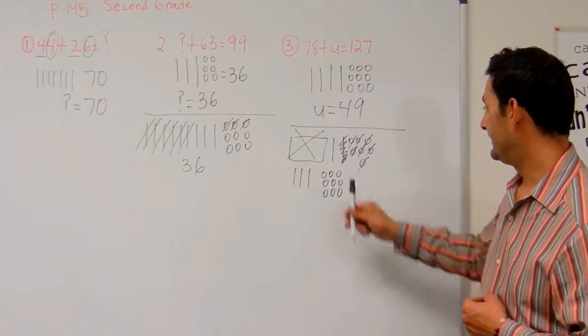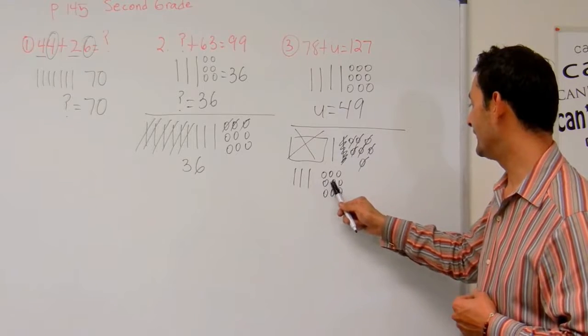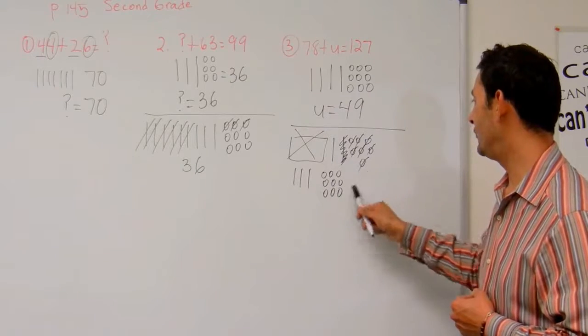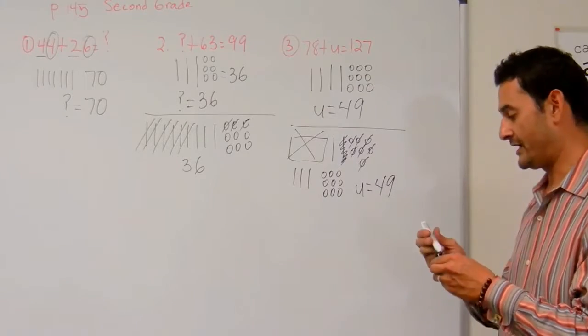And my answer is going to be 10, 20, 30, 40, 41, 42, 43, 44, 45, 46, 47, 48, 49. So U is going to equal 49.